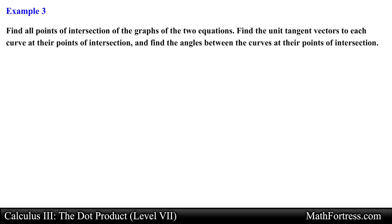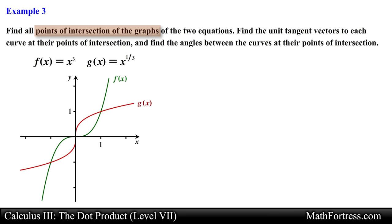Find all points of intersection of the graphs of the two equations. Find the unit tangent vectors to each curve at their points of intersection, and find the angles between the curves at those points. We first need to find the points of intersection, so let's plot these two functions to get a visual of the problem. To find the intersections, we set both functions equal to one another and solve for x.